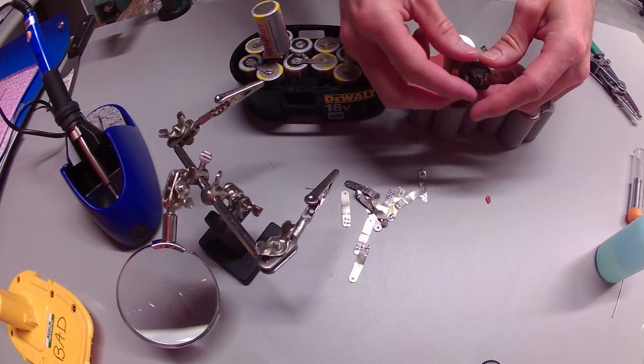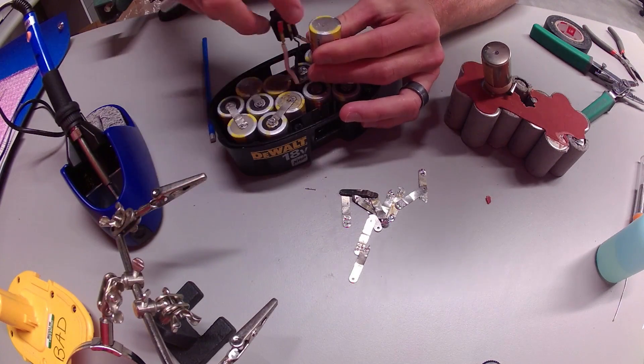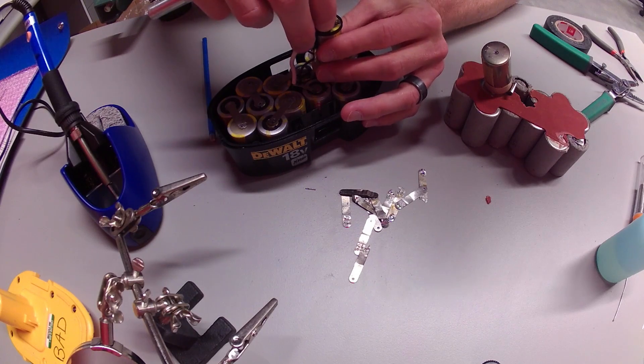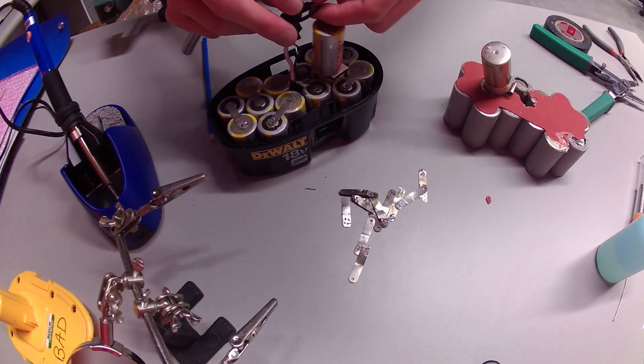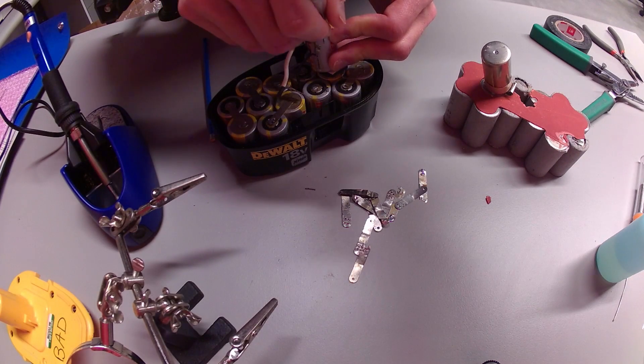I'm gonna gently pry off the set of terminals here from the old battery. I'm gonna have to cut the sheath back a little bit here on this battery to solder this in place. I also need to make a little slot here on the side to re-solder my thermocouple wire.